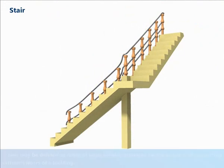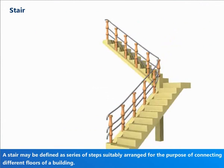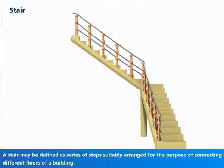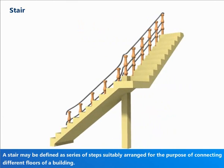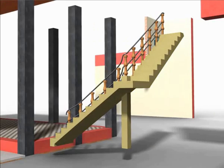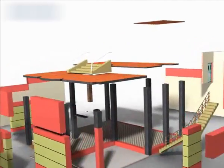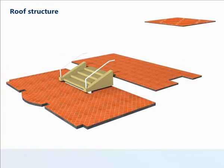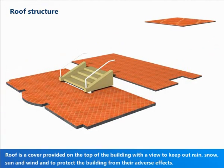A stair may be defined as a series of steps suitably arranged for the purpose of connecting different floors of a building. Roof is a cover provided on the top of the building with a view to keep out rain, snow, sun and wind and to protect the building from their adverse effects.